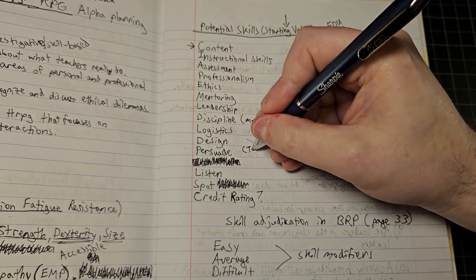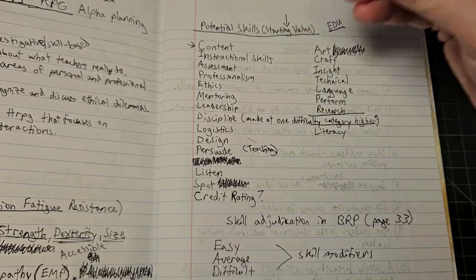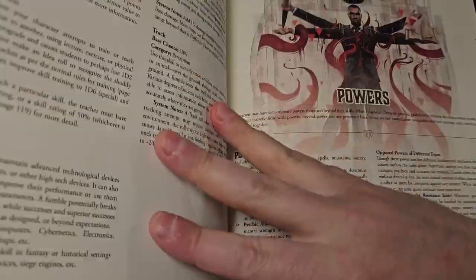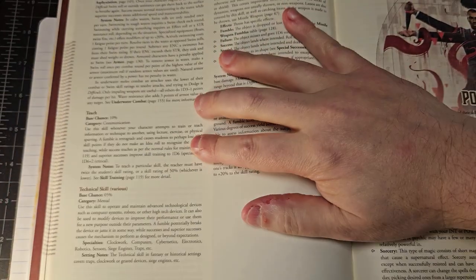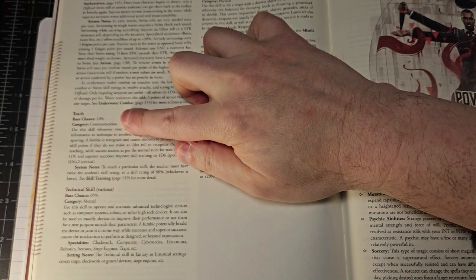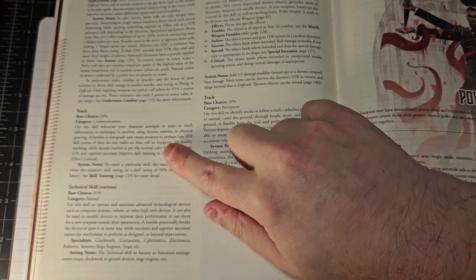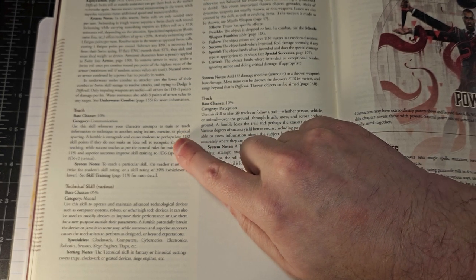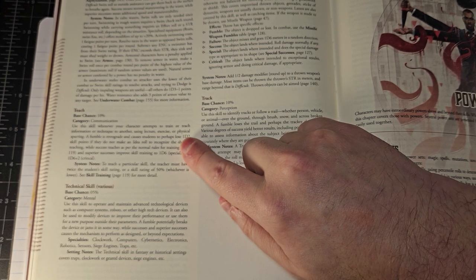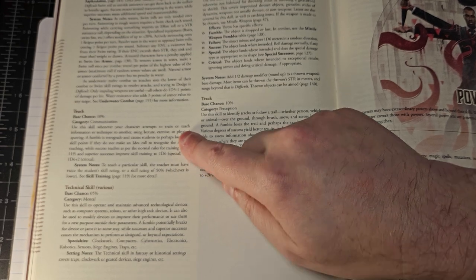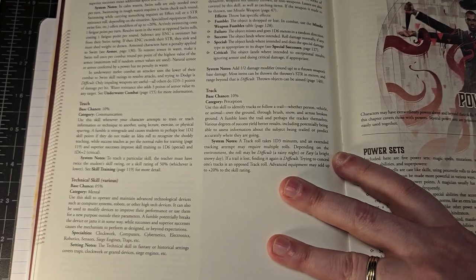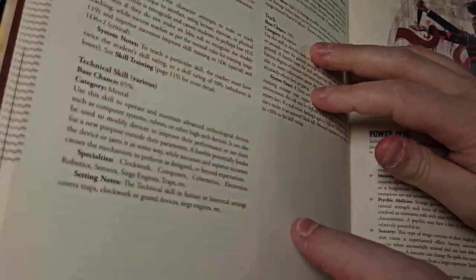Persuading - I thought about the possibility of using the teaching skill that is illustrated in Basic Role-Playing. It doesn't work for me - no offense to the designers. If a designer isn't an educator, we don't expect them to know what's going on. I would put teaching under the category of communication absolutely, but 'use this skill whenever your character attempts to train or teach information or technique to another using lecture, exercise, or physical sparring' - that's all fine, that's a very basic apprenticeship style approach to teaching.